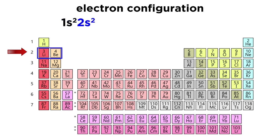Then moving to the second period, we have 2s2, 2p6. Moving to the third period, we have 3s2, 3p6. Moving to the fourth period, we have 4s2.